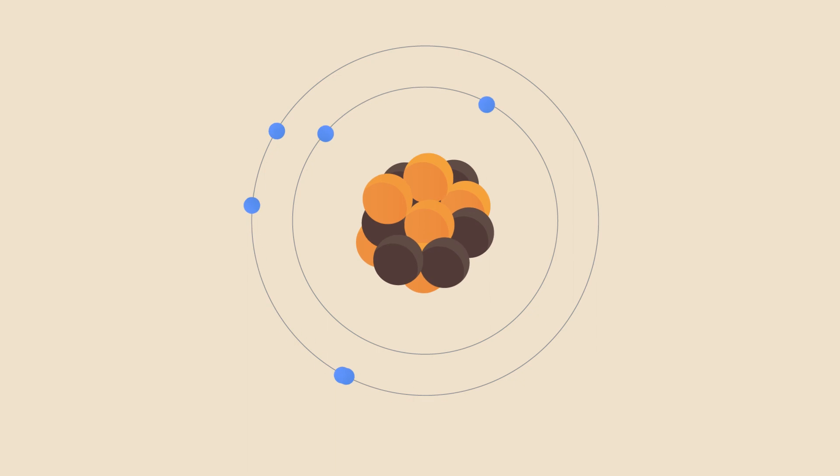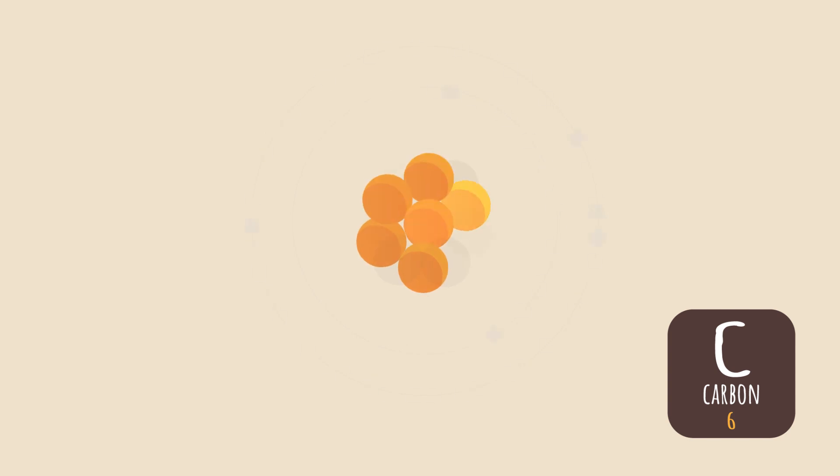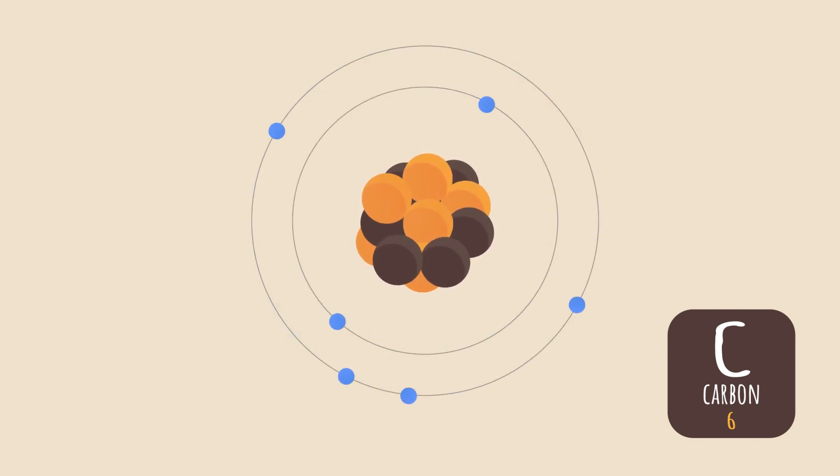The number of protons an atom contains is used to classify the element. All carbon atoms, for example, contain six protons, but the number of neutrons in a carbon atom can vary.